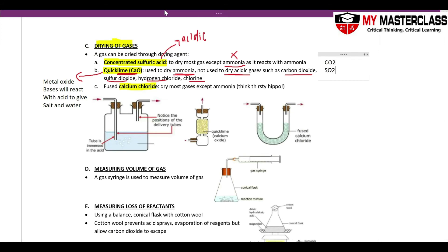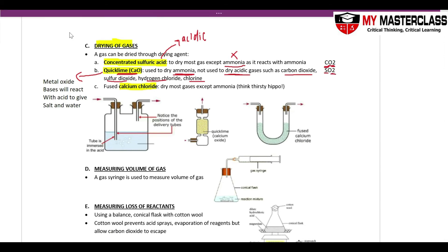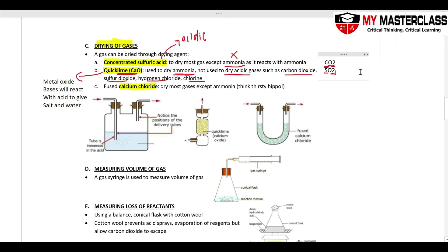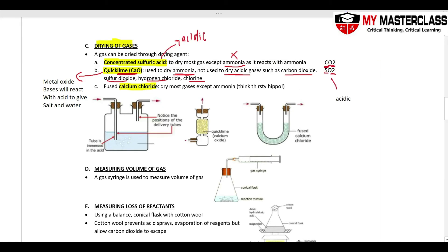Acidic gases like SO2, HCl, and CO2 are non-metal oxides or non-metal compounds — these are acidic. Since they are acidic, they will react with the base calcium oxide, so calcium oxide cannot be used to dry these acidic gases.